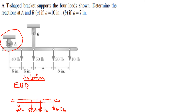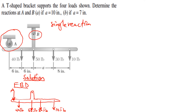Looking at the A section, we have a support system which is a roller, so a roller gives us a single reaction — a downward reaction. We call that point A. At B, we have a pin support, which gives us both a horizontal reaction Bx and a vertical reaction By.